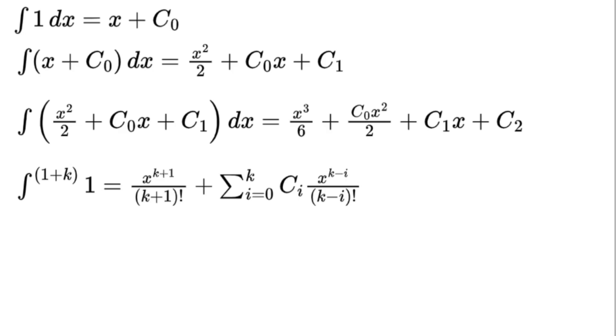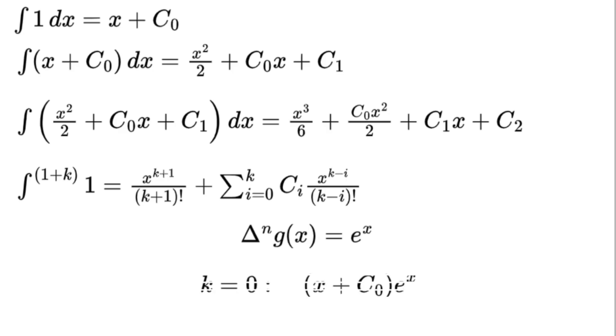Since the derivative of g(x) equals e to the power of x is always e to the power of x, let's compute the first few terms. For k equals 0: (x plus c₀) times e to the power of x.